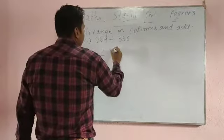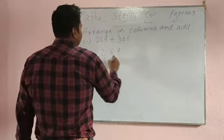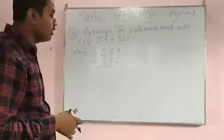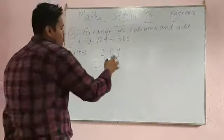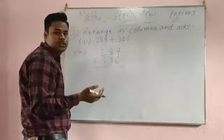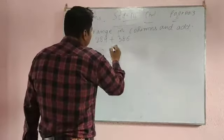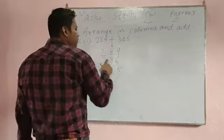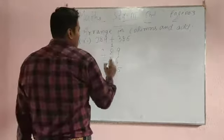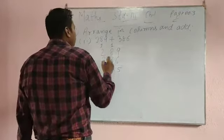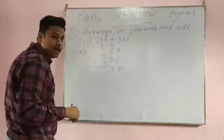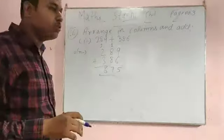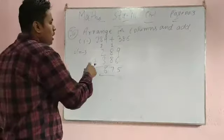You have to arrange in column first, then you have to add. This is carry. 9 plus 6, very easy, 15. One carry will come. 8 plus 8 is 16, 16 plus 1 is 17. Again one carry will come. 2 plus 3 is 5, 5 plus 1 is 6. It is very easy, you have to arrange and add in column.